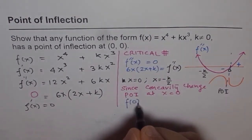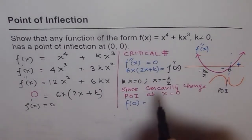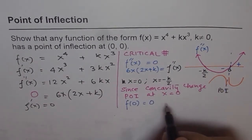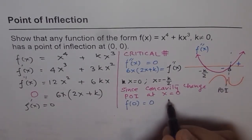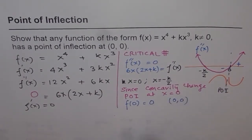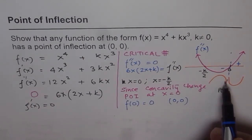If I plug in 0 here, I do get 0. So this point truly is (0, 0). And we have proved that at this point, we'll always have a point of inflection.